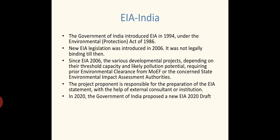Since EIA 2006, various developmental projects — depending on the threshold capacity and likely pollution potential — require prior environmental clearance from the Ministry of Environment and Forest, or the concerned State Environmental Impact Assessment authorities. Every project that depends on the environment must now get this clearance. The project proponent — who is implementing the project — is responsible for the preparation of the EIA statement with the help of an external consultant or institution, which is then submitted to the concerned authority.